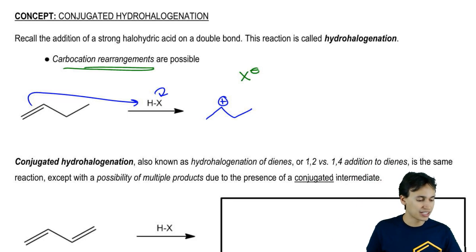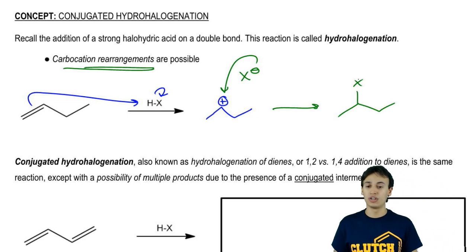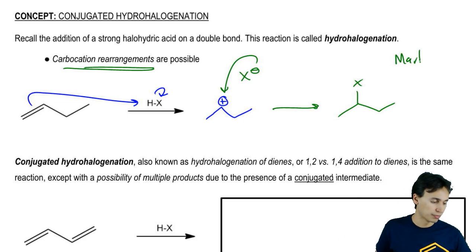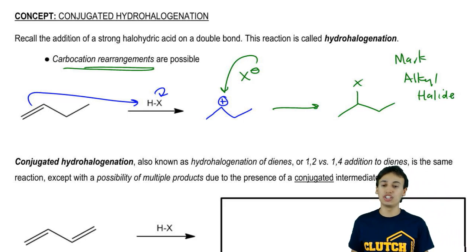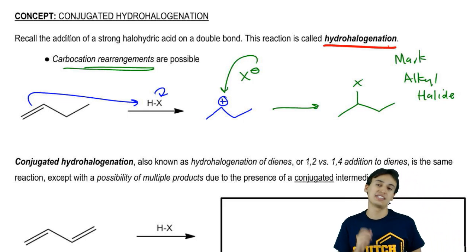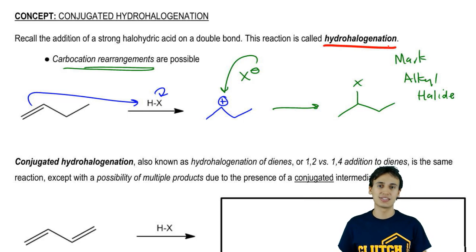Then X⁻ attacks to form a Markovnikov alkyl halide — that's our product. Remember, the name of this reaction is simply hydrohalogenation: a double bond attacking HX.